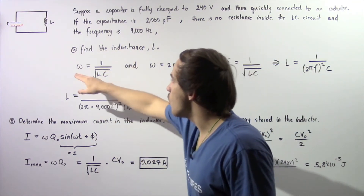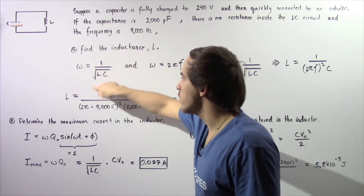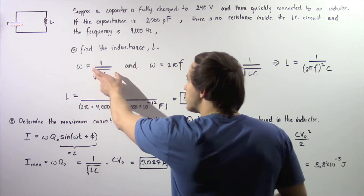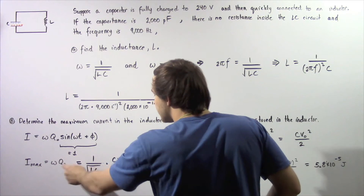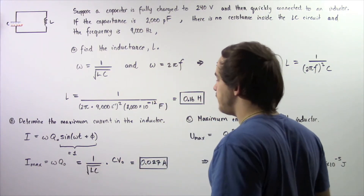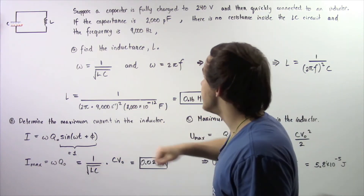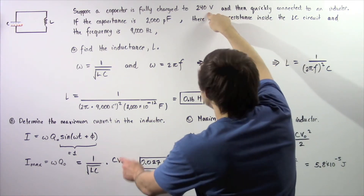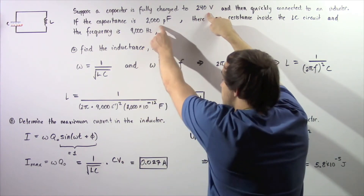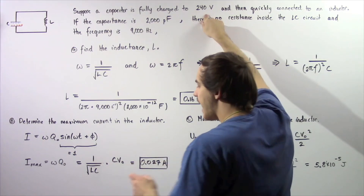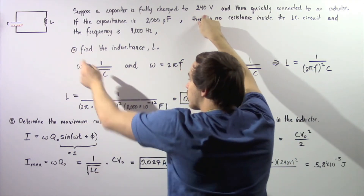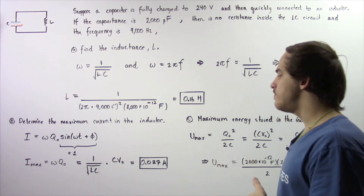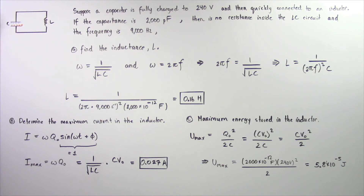We know from part A that omega equals 1 divided by the square root of L times C. We replace omega with this expression and replace Q naught with C times V naught, where V naught is the initial voltage of 240 volts. Plugging in 240 volts for V naught, 2000 picofarads for C, and 0.16 henrys for L, we get a maximum electric current of about 0.027 amps.